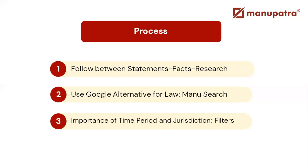At Manupatra, we provide Manu Search — a Google alternative for legal research. Use it the same way you use Google. Third, consider the importance of time period and jurisdiction. If you're looking at cases or developments from just the last five years, or if you're focusing on three commonwealth countries, you can narrow your research accordingly. If you're using a legal research database like Manupatra, use the available filters.